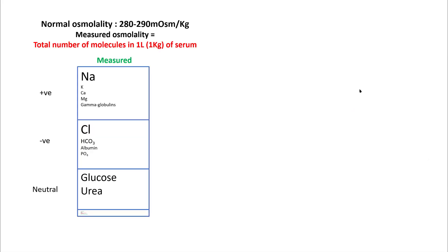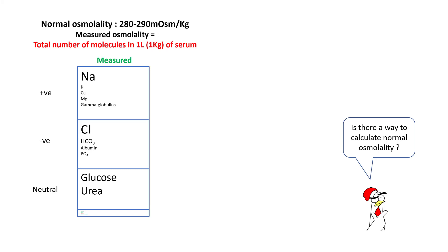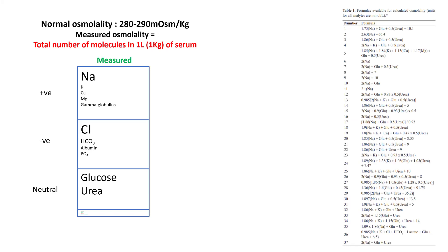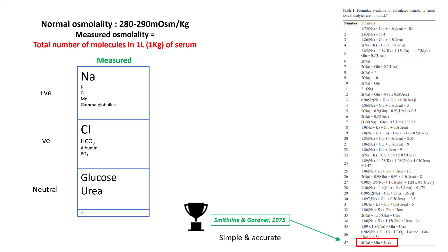Normal serum osmolality is between 280 to 290 milliosmol per kilogram of serum, with different types of molecules — positive ions, negative ions, and neutral ions — present in different quantities. Over the past 50 years, doctors and scientists have been trying to calculate normal osmolality instead of measuring it, deriving multiple equations. However, the formula by Smithline and Gardner in 1975, which you have already read in your textbook, is the most simple and very accurate, so we'll be using this formula.